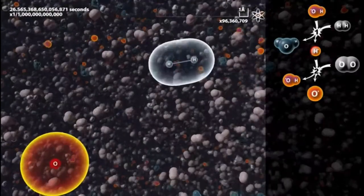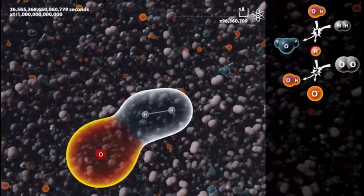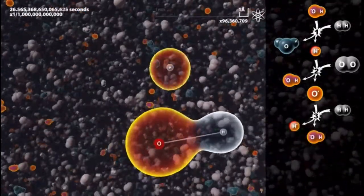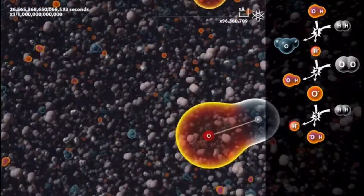After a while, this O atom meets an H2 molecule. You might think that an H2O molecule will be formed, but that is not how water molecules are created. Instead, this interaction gives us two new radicals, H and HO.